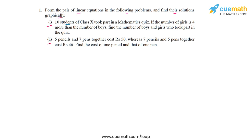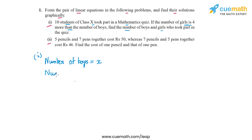It says that 10 students of class 10 took part in a math quiz. If the number of girls is 4 more than the number of boys, find the number of boys and girls who took part in the quiz. The two unknowns here are the number of boys and the number of girls. Let's assume the number of boys is x and the number of girls is y. Since there are 10 students total, x plus y equals 10. So our first equation is x plus y equal to 10.